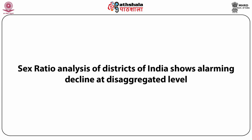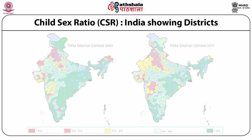We are now looking at districts — nearly 600, about 630 to 640 districts in 2011. When you look at the state level it is aggregate, but at the district level you find that even parts of Madhya Pradesh and Uttar Pradesh show deep red drops, meaning ratios between 830 or even much less than that.